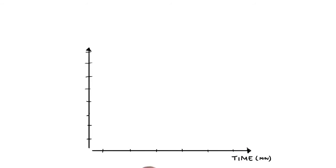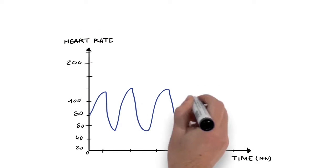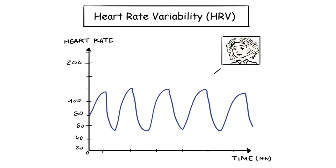The heart rate of a healthy, resilient person actually changes with every heartbeat. This is called heart rate variability, or HRV.